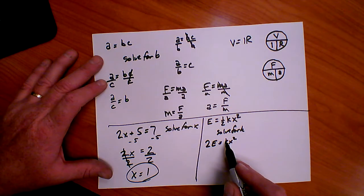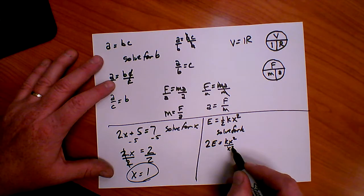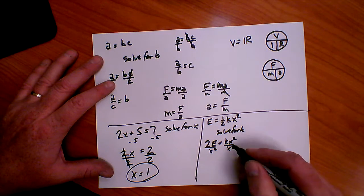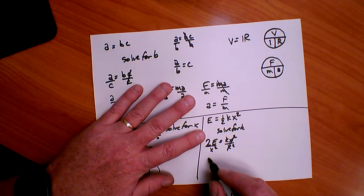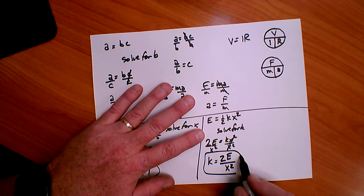And then to solve for K, I need to get rid of the X squared. I'm going to divide both sides by X squared like so. So X squareds cancel and K is equal to 2E divided by X squared. That's solved for K.